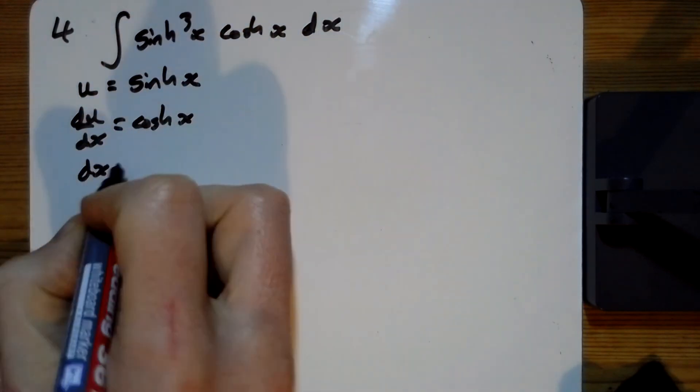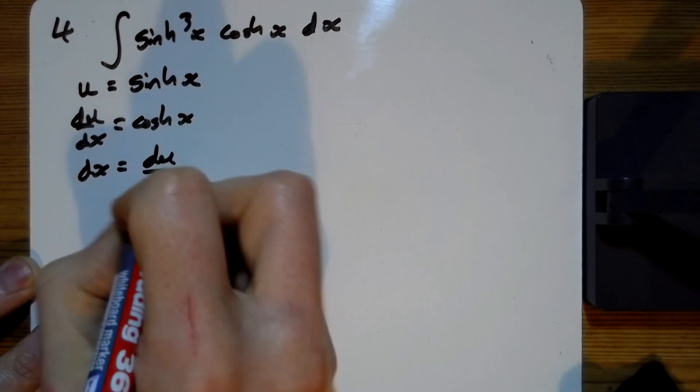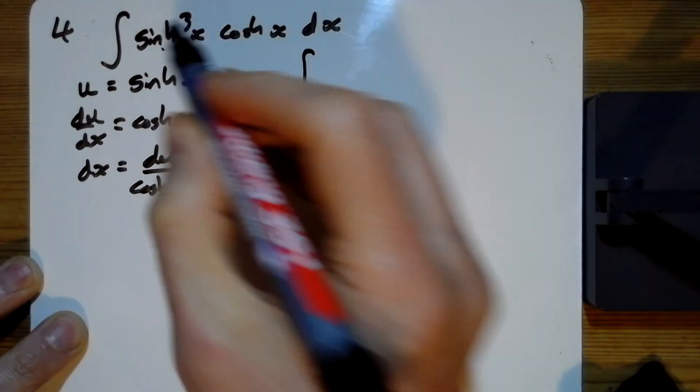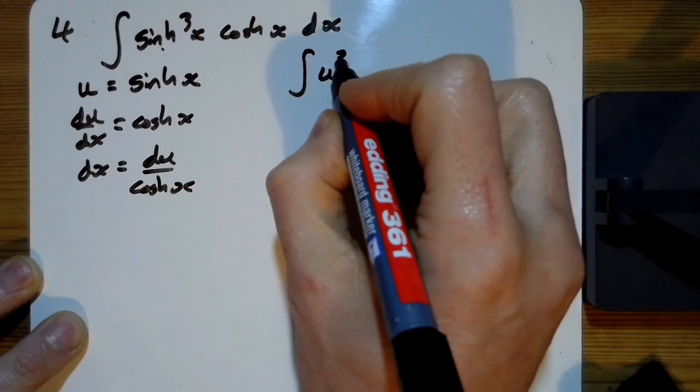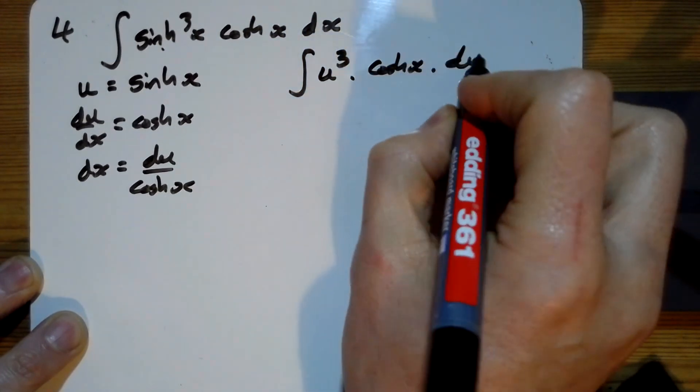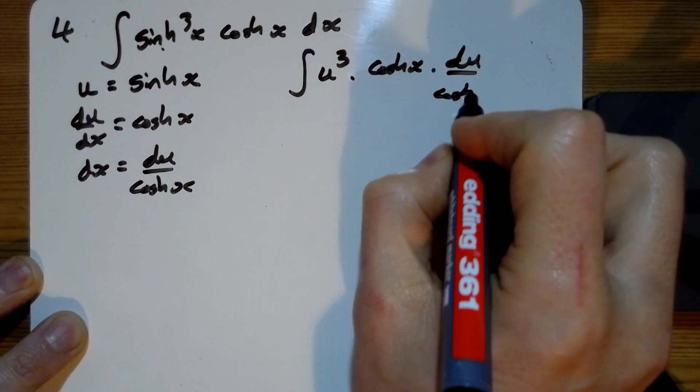So that gives me that dx is du over cosh x. This integral, rewriting it then, is this part here, which is u cubed, times by the cosh x, times by the du over the cosh x.